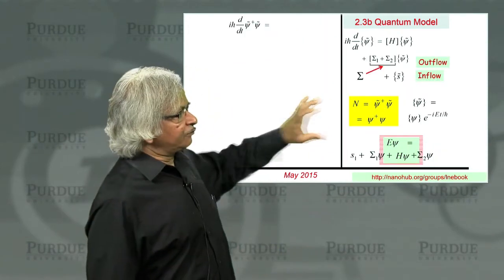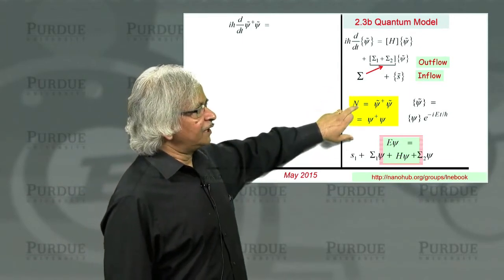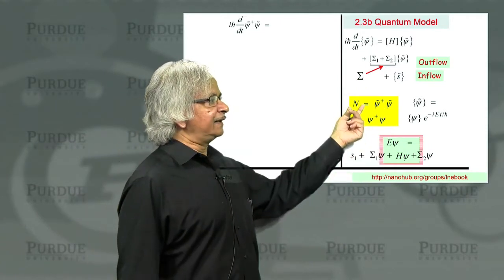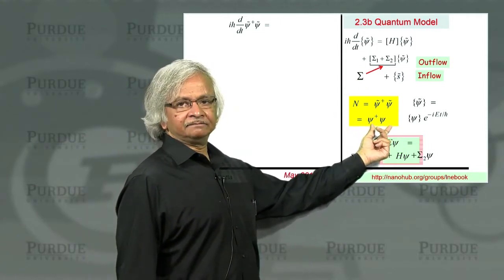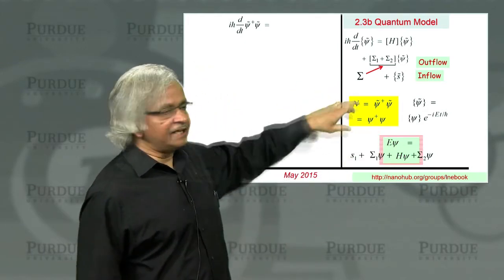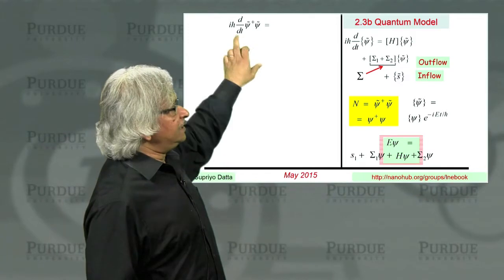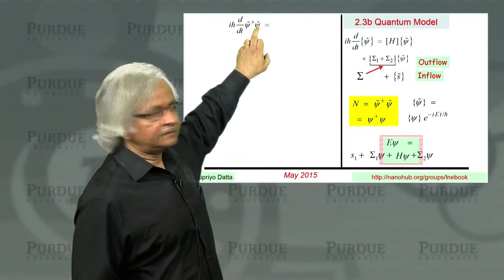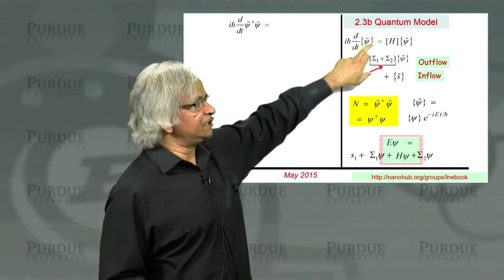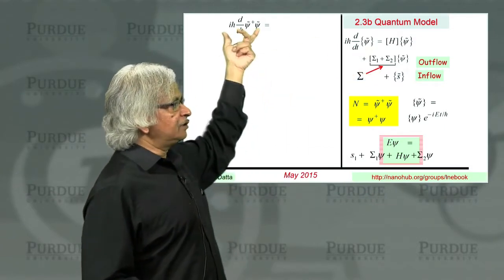In order to understand that, the first thing we need to know is how to connect the number of electrons to the wave function. The connection is that N is the quantity psi-dagger times psi. And in order to understand dN/dt — the rate at which the number of electrons changes — what we need is d/dt of psi-dagger psi. The time-dependent Schrodinger equation gives us d/dt of psi, so the question is how we use that to find dN/dt.